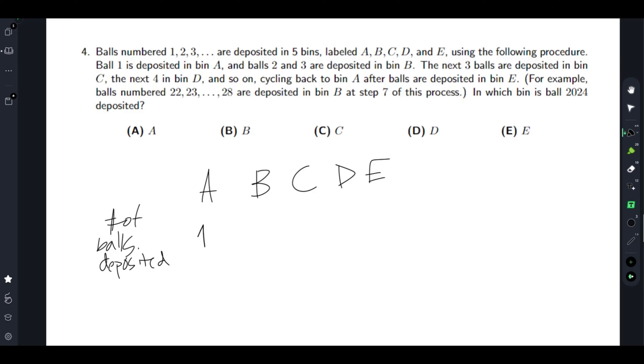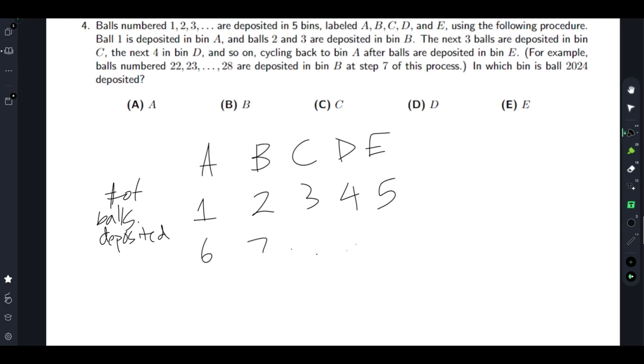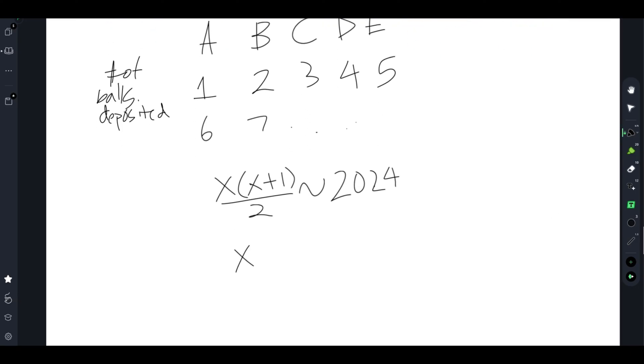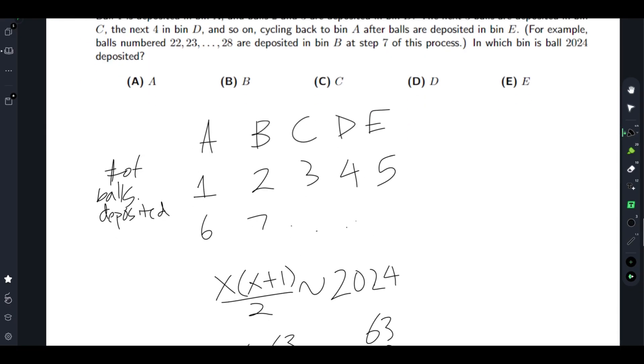We get x times x plus one over two is around 2024 because we want to find the 2024th ball. So we find that x is equal to 63 works because 63 times 32 is 2016. So on the 63rd bin, or bin D, there will be 2024 balls deposited. So bin D.